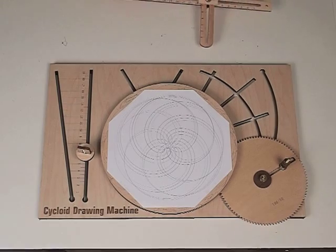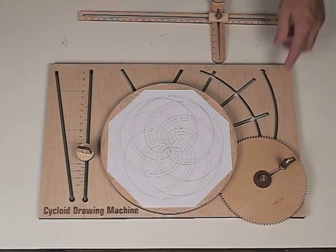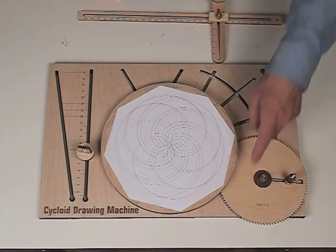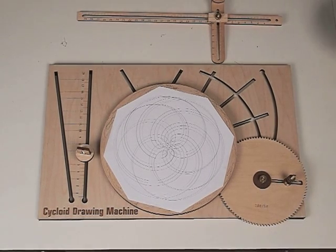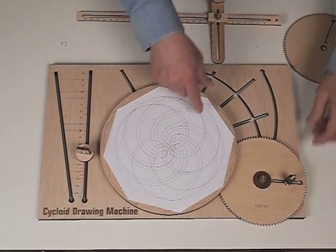One of the neat things is if we take the 100 gear and replace it with a 49, we'll get a nicer cycloid pattern because it will never repeat.